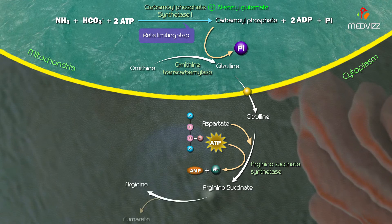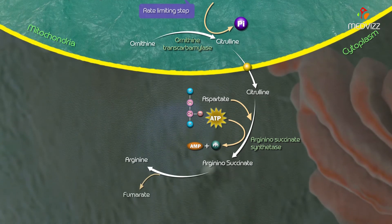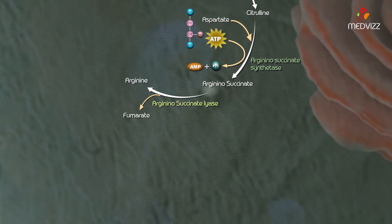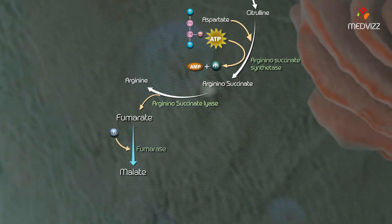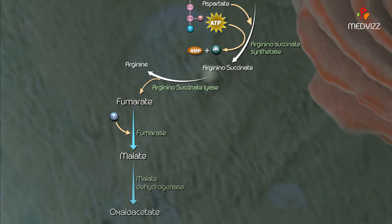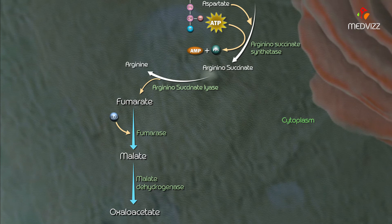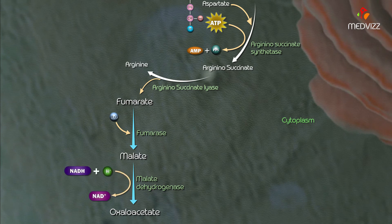In the next step, argininosuccinate is cleaved into arginine and fumarate by the enzyme argininosuccinate lyase. The fumarate is then converted to malate, and malate is converted to oxaloacetate. This series of reactions occurs in the cytosol and generates reduced NADH.